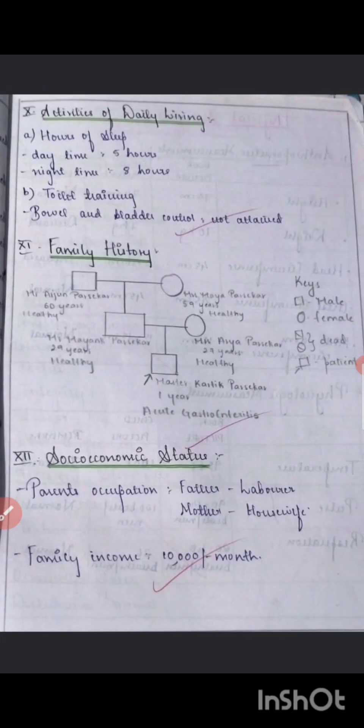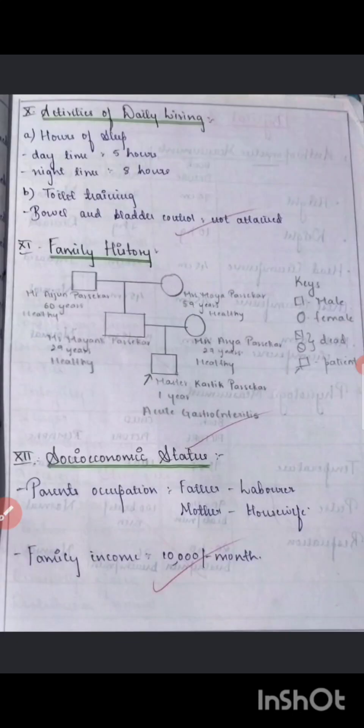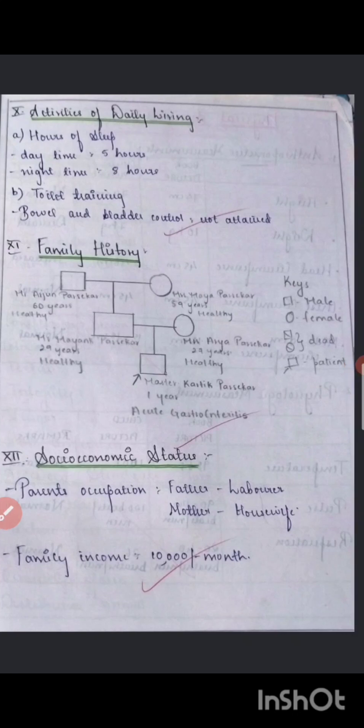Next comes activities of daily living — how long the child sleeps at night, how long during the day, and toilet training — whether it has been attained or not. If attained, also mention whether there are any complications.